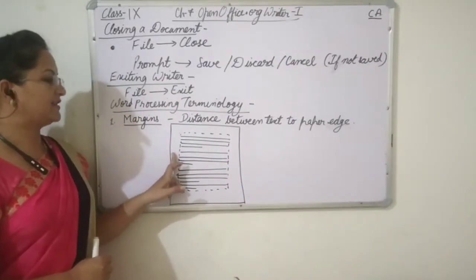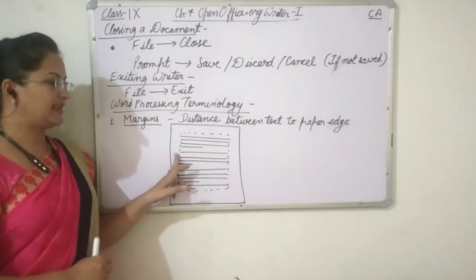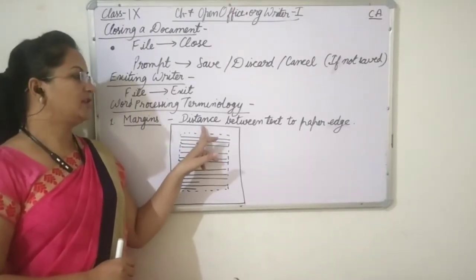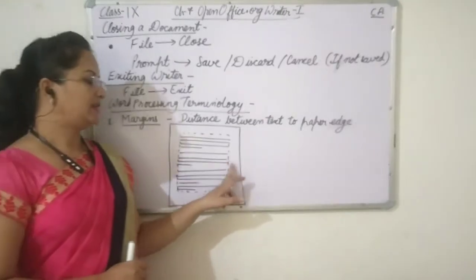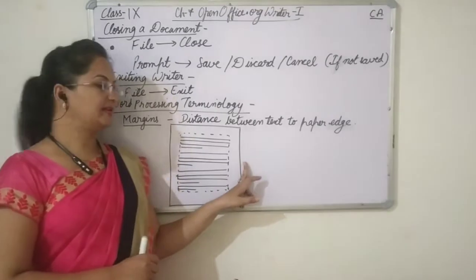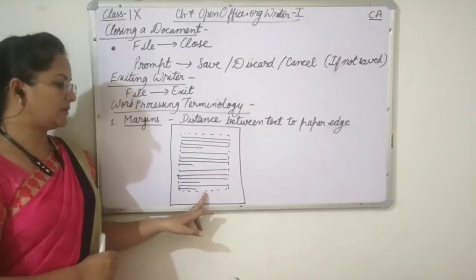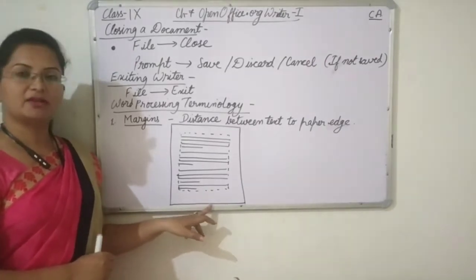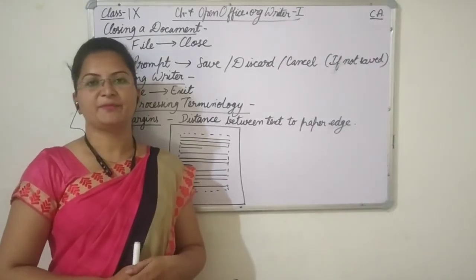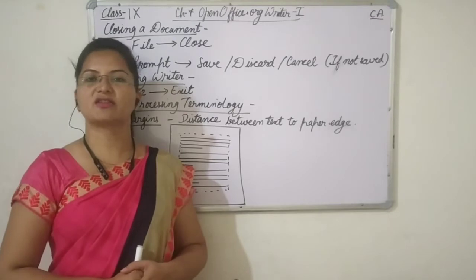If there is a space between the left edge and the text, then it is the left margin. If there is a space between the text and the top edge, then it is the top margin. If there is a space between the text and the right edge of the paper, then it is the right margin. And if it is the distance between the text and the bottom edge of the paper, then it is the bottom margin. So in total there are four types of margins: left, top, right, and bottom margin.